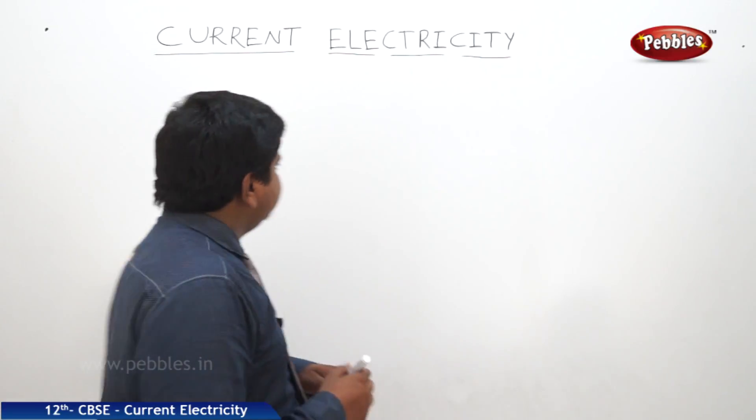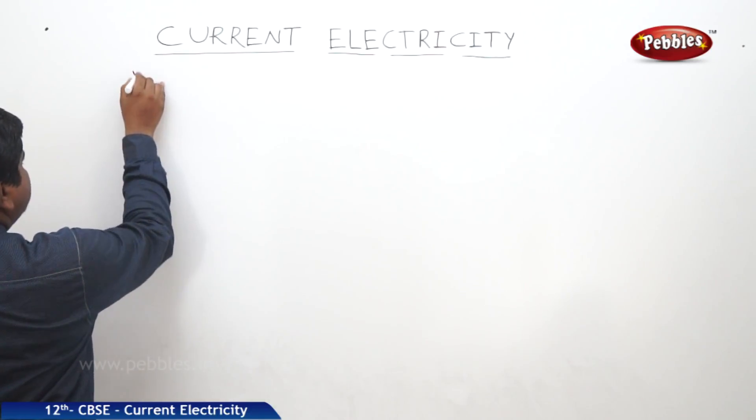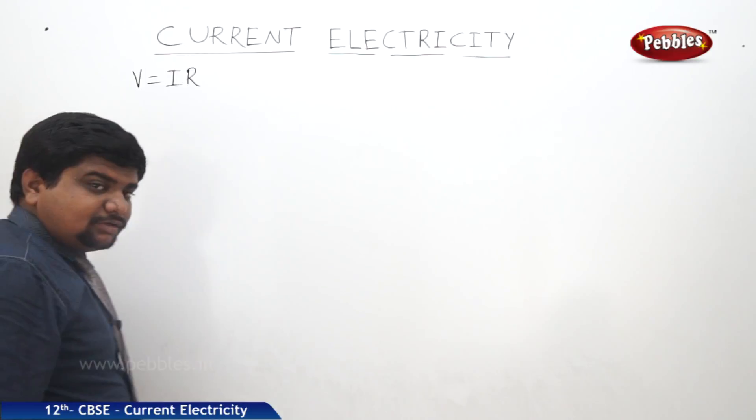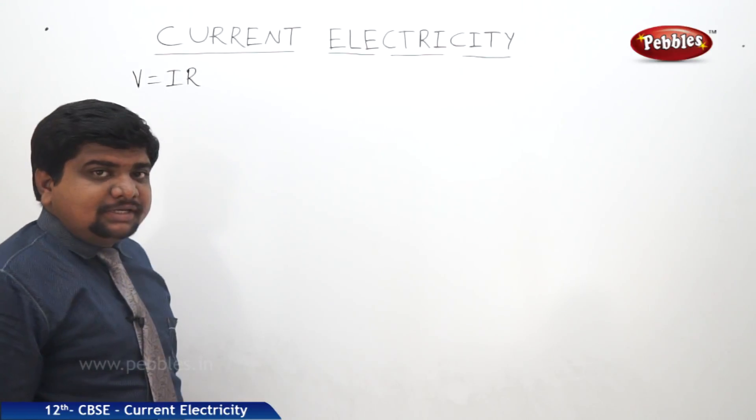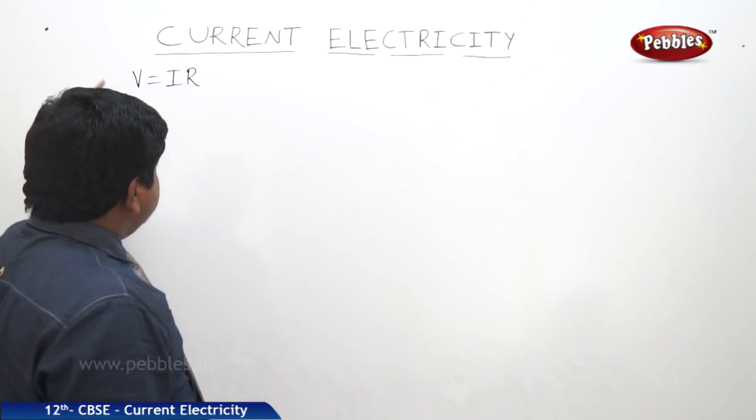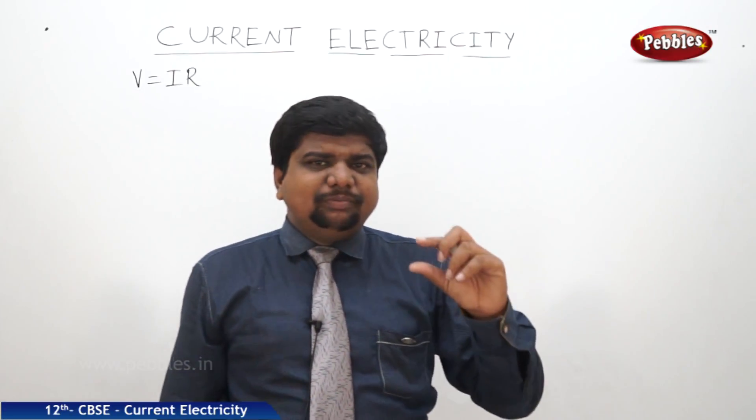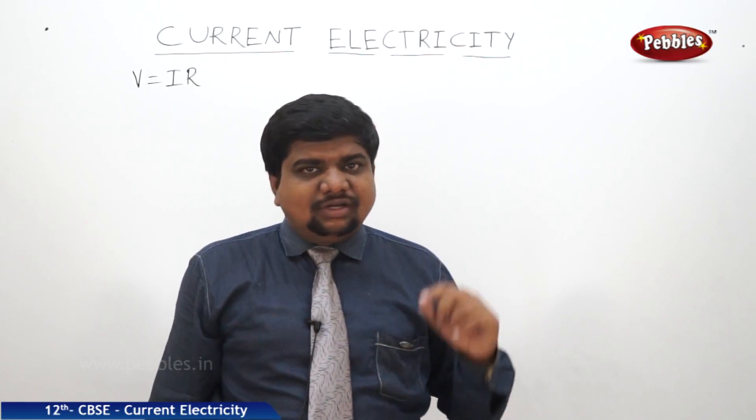Now, we will see the limitations of Ohm's law. We know that Ohm's law is equal to V is equal to IR. Where R is equal to resistance, I is equal to current, V is equal to voltage. This Ohm's law is not valid for all materials. Only few materials obey the Ohm's law, few not.